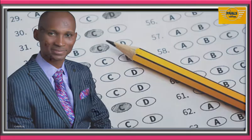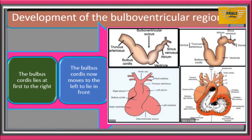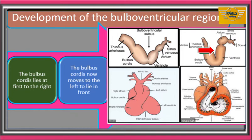The bulbus cordis and primitive ventricle are the two parts that will give rise to the ventricle. The bulbus cordis at first lies to the right side of the primitive common ventricle with a deep sulcus between them. This sulcus gets narrow and will eventually get obliterated. The bulbus cordis now moves to the left to lie in front of the common ventricle. The proximal part of the bulbus cordis becomes absorbed inside the primitive ventricle to form the common bulboventricular chamber.